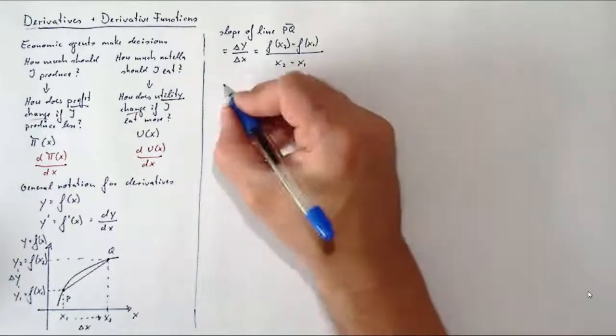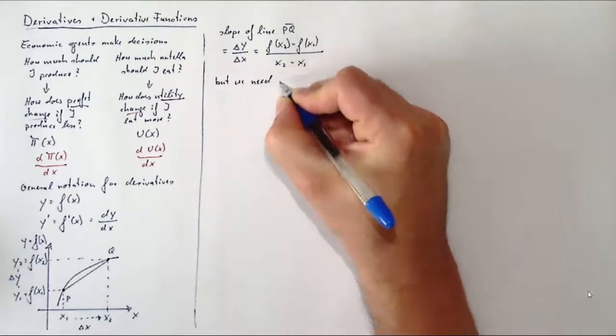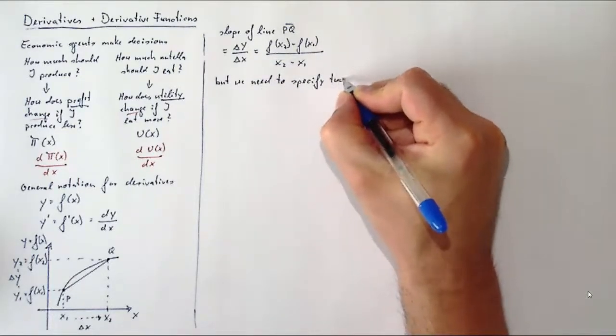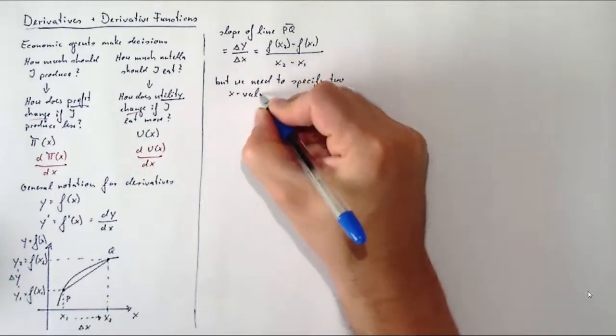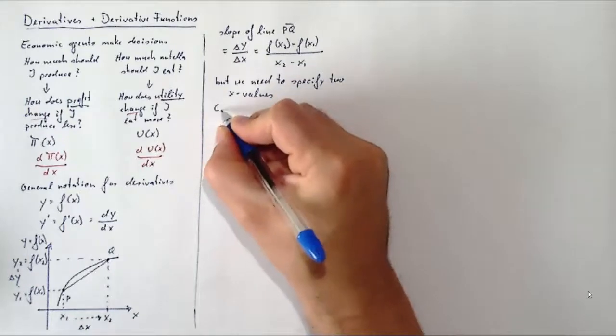In some sense, that's an expression of how the value of the function changed as we moved from x₁ to x₂. But to think about this, we had to specify two values of x: x₁ and x₂. So we need to look at two x values, and instead of x₂ we could have chosen any other value.